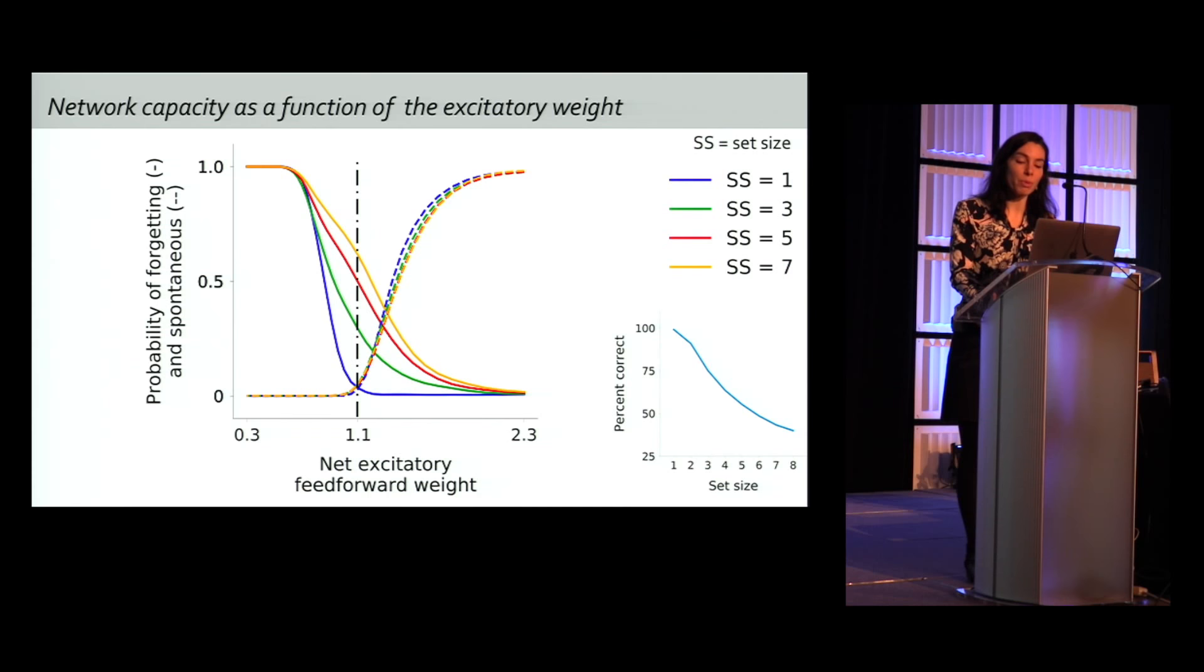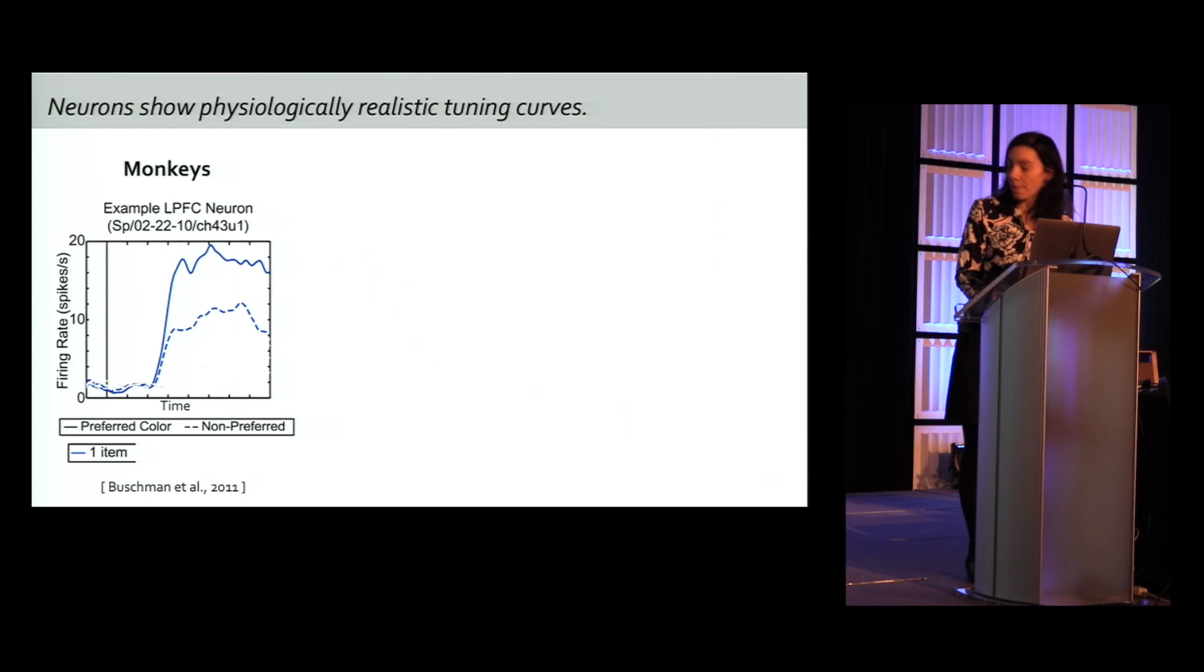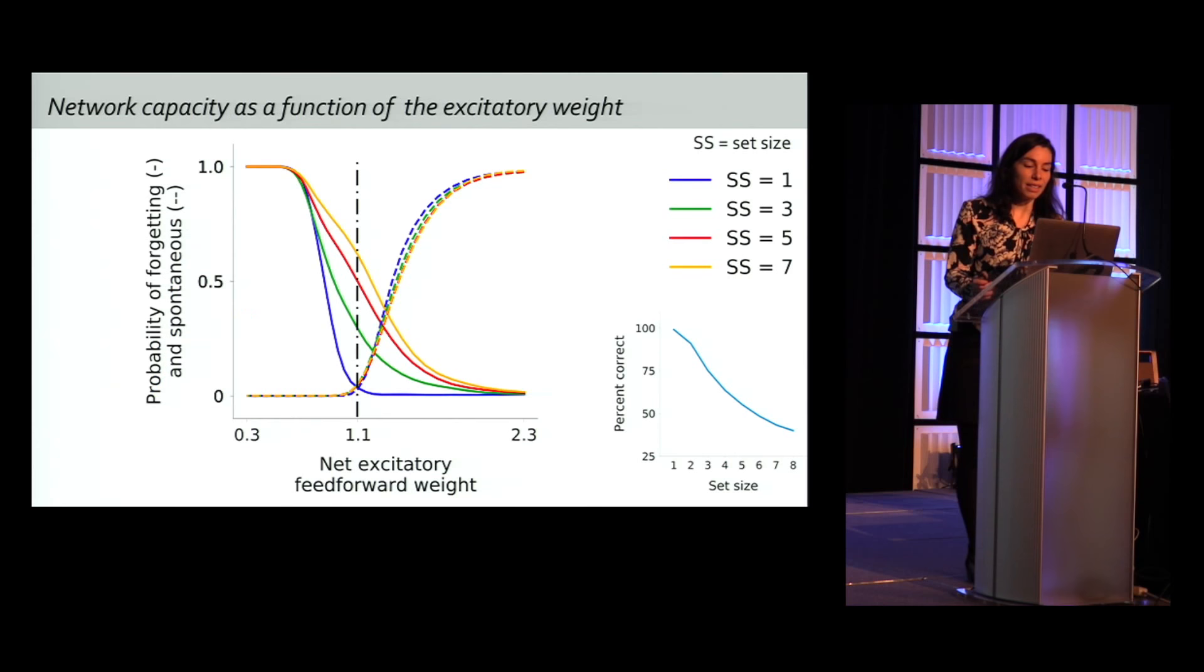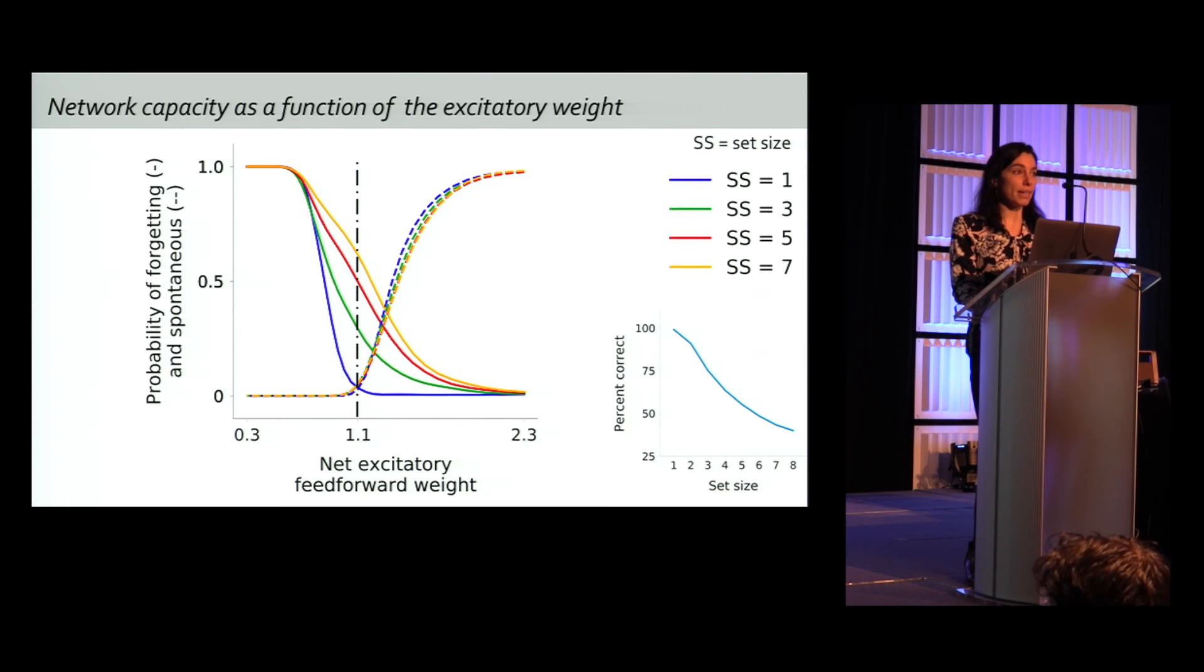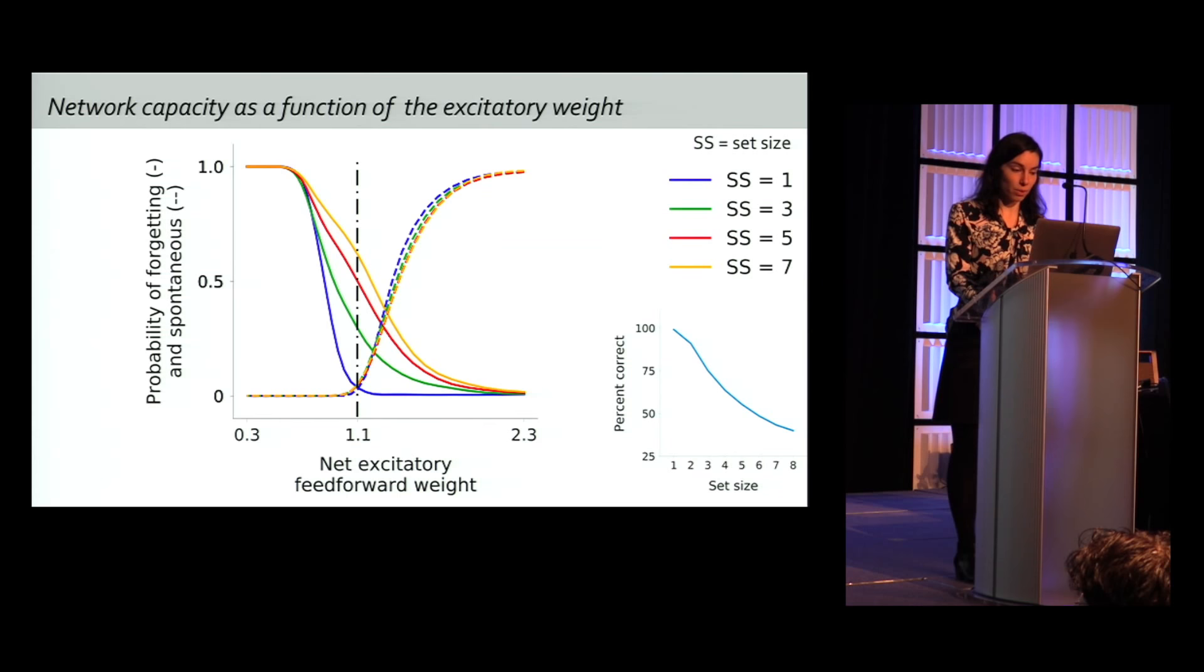Now, when we increase load, because of the interference, memory representations inhibit one another until failing. And this provides the limited capacity of the network. By staying on this dotted line here, when the network is not creating any spontaneous memory, we retrieve here the decay in performance as a function of set size. So there is no parameter in this network that permits a limited capacity for any number of initial load without creating spontaneous memories.